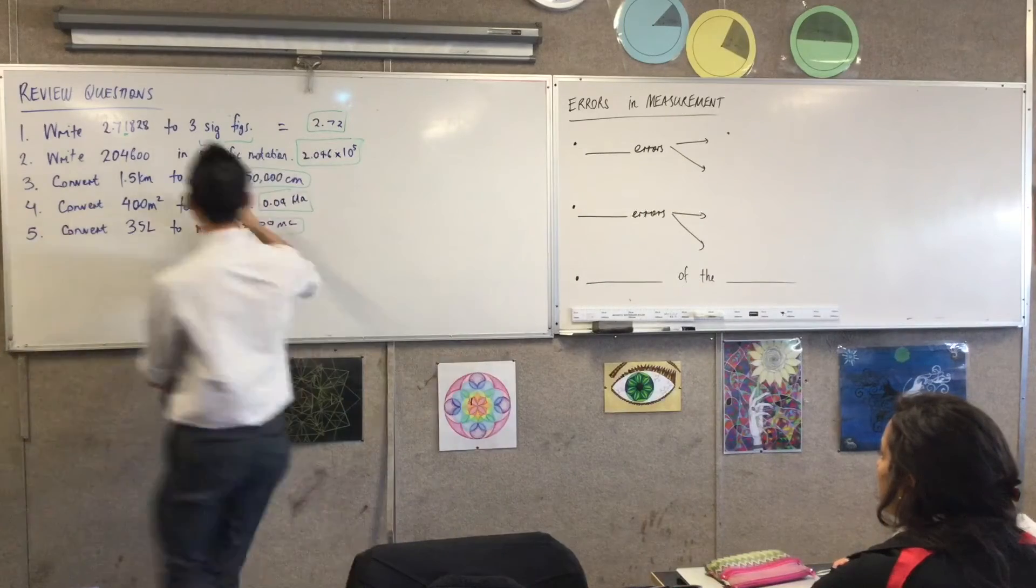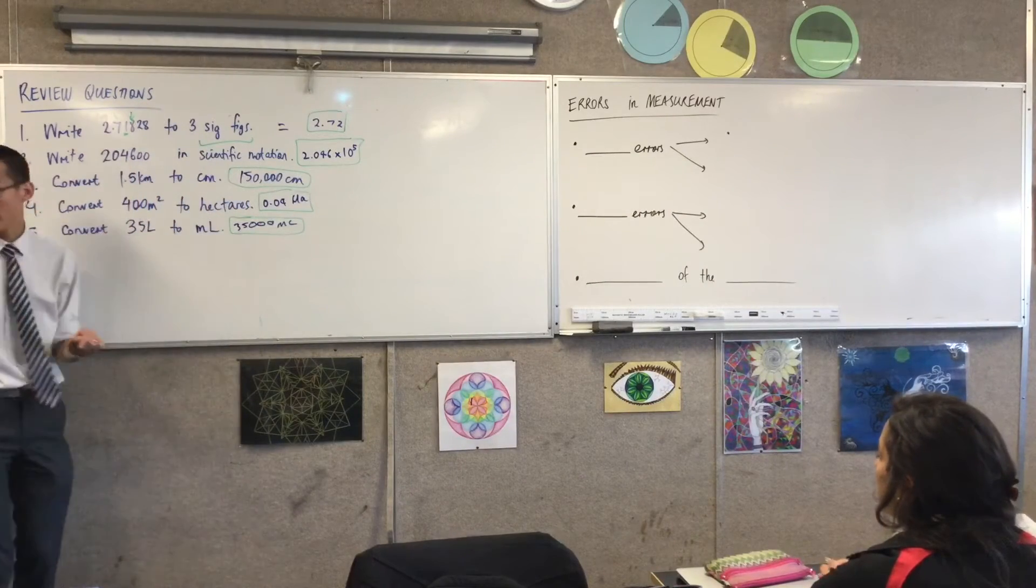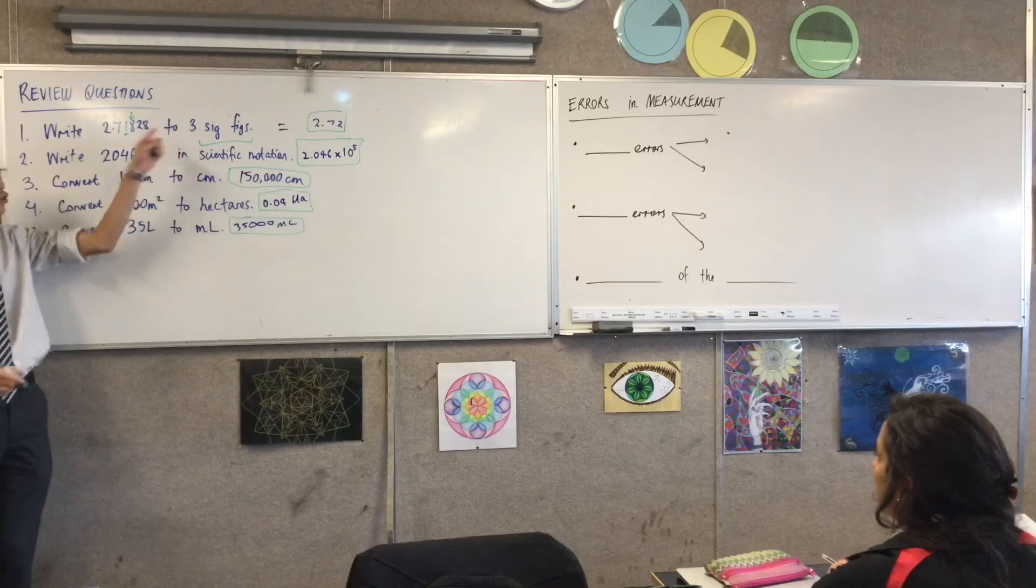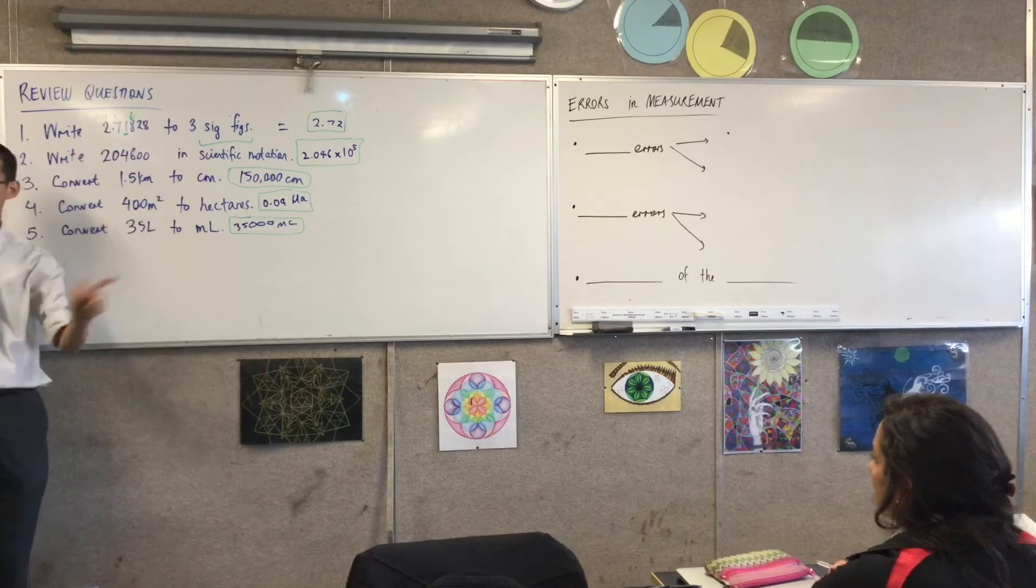Okay, because it's the number directly after it, which means 2.72 will be closer than 2.71. Happy?